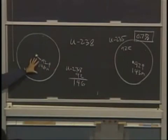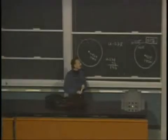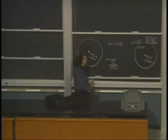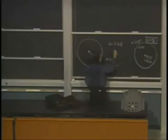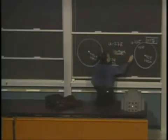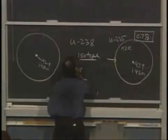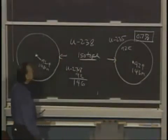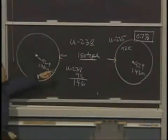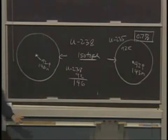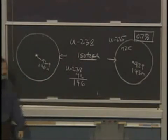Uranium-238 has decayed away too, but it has a longer half-life, so not much of it is gone. These are called different isotopes. Here's one isotope of uranium, here's another. This one is a rare isotope — well, not really rare: 0.7% is enough that you can do something with it.